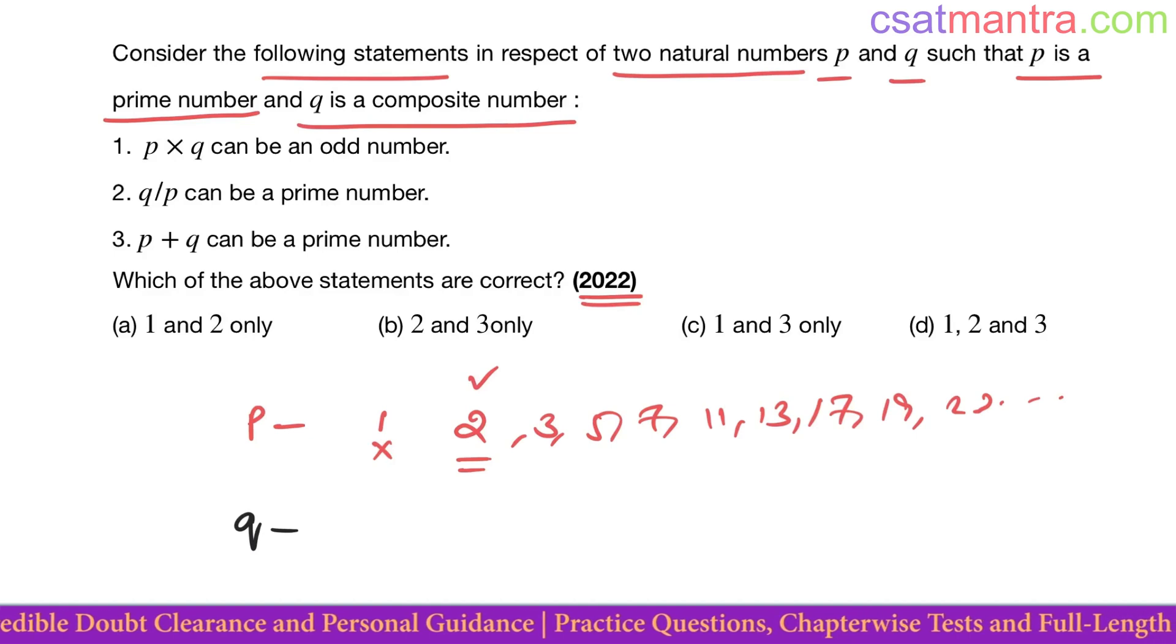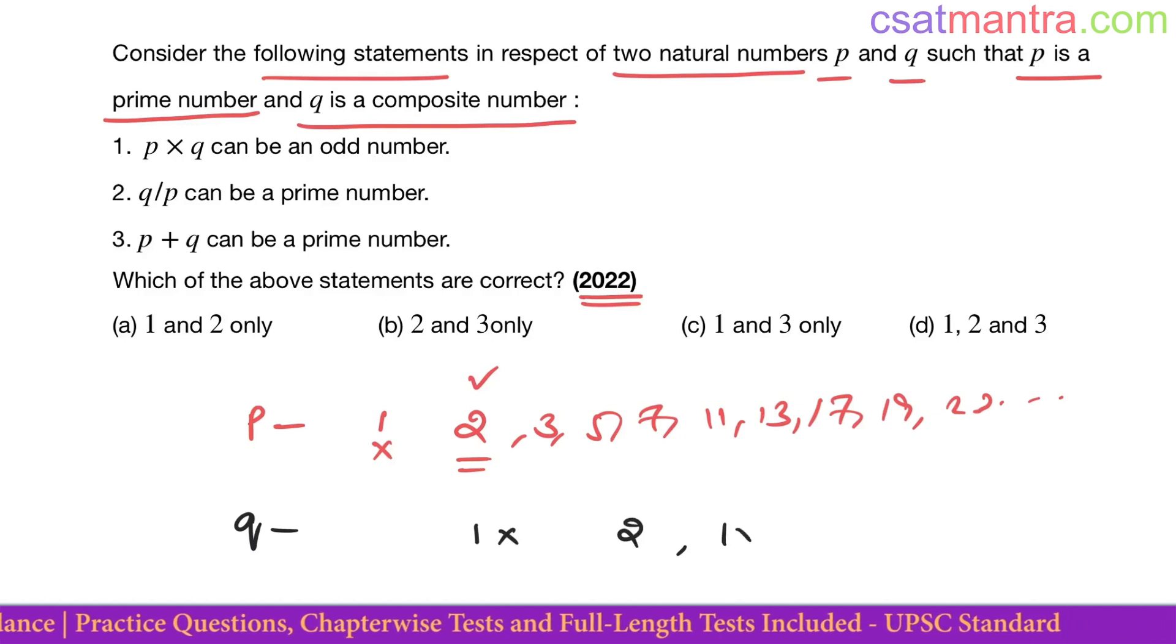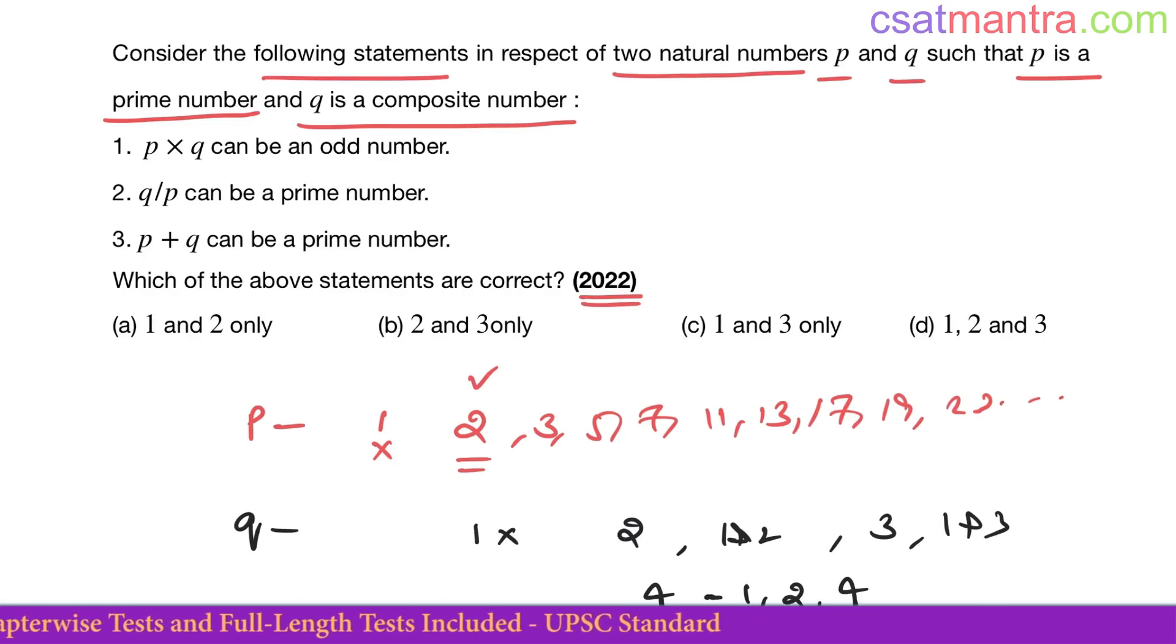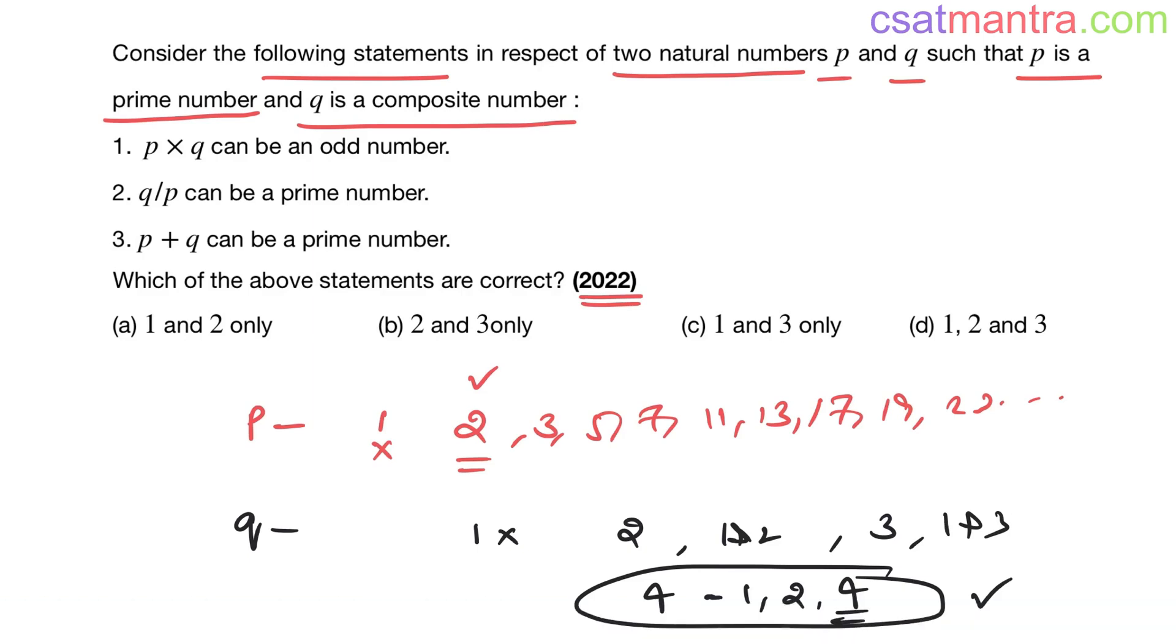One has only one factor, that is one. Two has one and two. Three has one and three. Four has one, two into two, so two is the factor, again four is the factor. So the smallest composite number is four. Definition of composite number is having factors more than two. More than two factors, that means three or above.